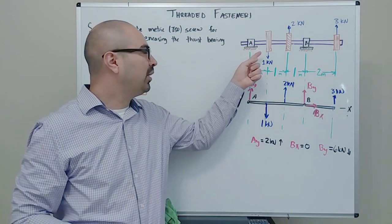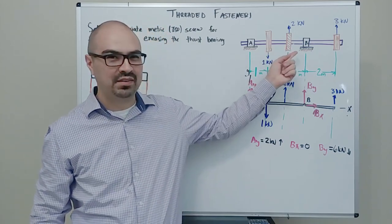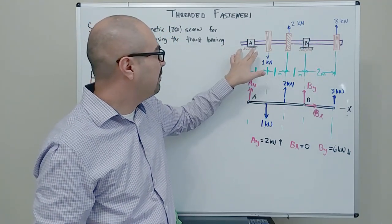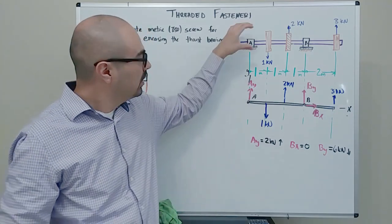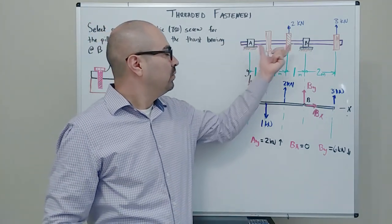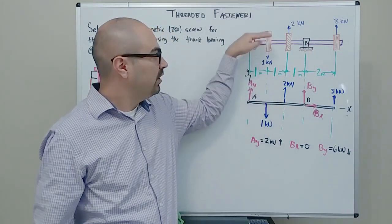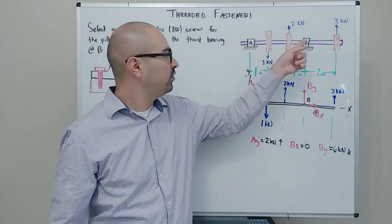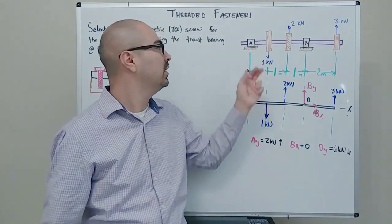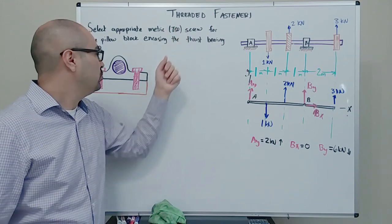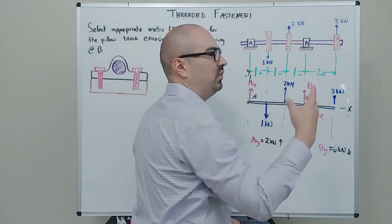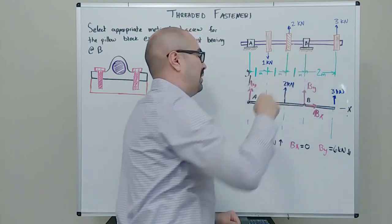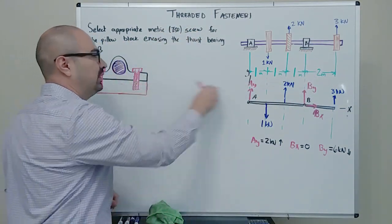You've seen problems like this in statics and solids — shafts with pulleys or gears spinning, with bearings at A and B keeping the system in equilibrium. From statics you learn how to solve for reactions; in solids you calculate deflections. Now in machine elements we're going to teach you how to size those bearings, and in this case how to size the bolts. We always assume bearings are grounded rigidly, but in reality they're either welded or, in this case, held in place by two bolts.